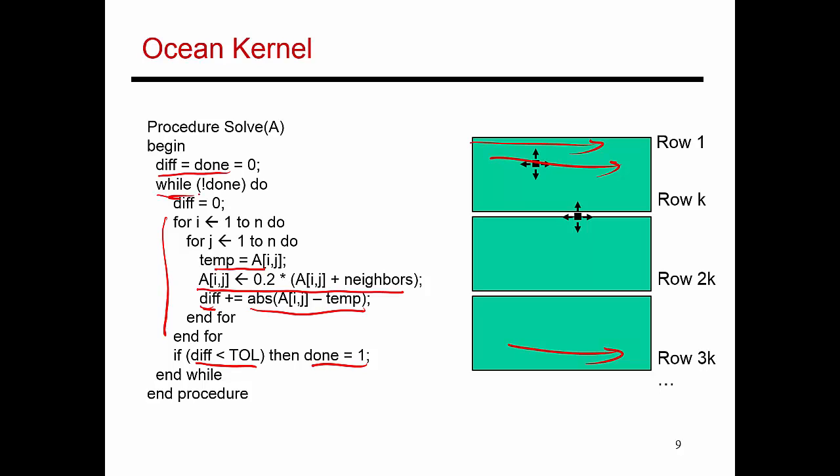Let's try to parallelize this application with both shared memory and message passing. We are going to do the parallelization in a similar manner, which means that if I have n processors available to me, I'm going to break up the rows into different groups. So I have one group of rows allocated to processor 1, the next set to processor 2, and so on — essentially partitioning the rows among the different processors.